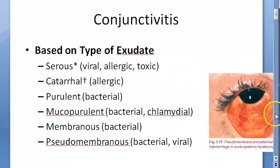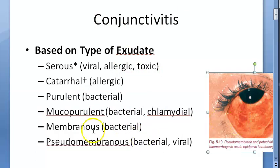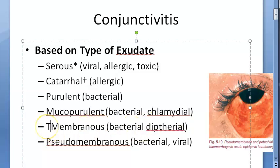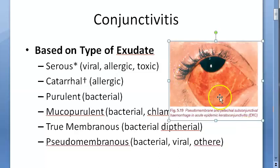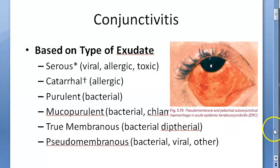Based on the exudate, conjunctivitis can be classified into membranous and pseudomembranous types. Membranous — true membranous — is diphtherial, while pseudomembranous can have bacterial, viral, and other causes as well. This image is showing a pseudomembrane.